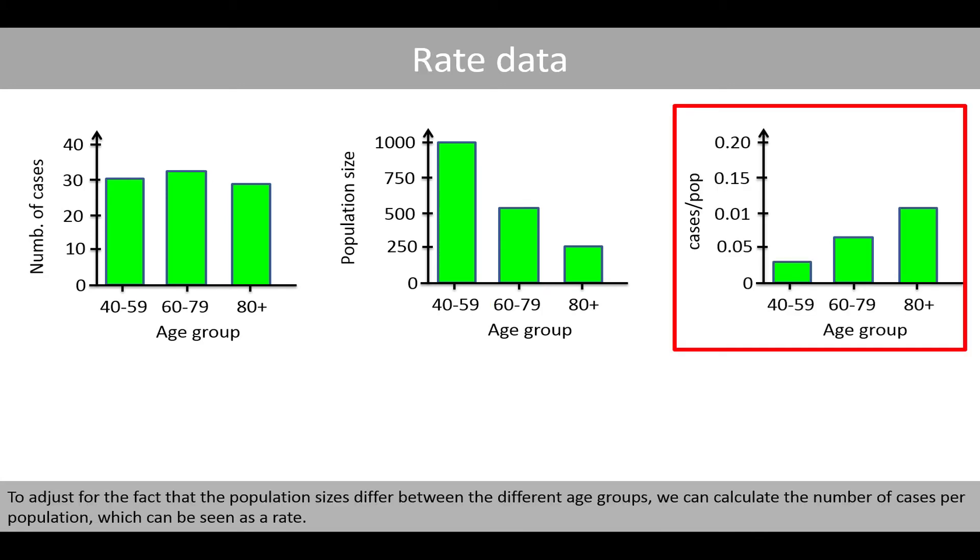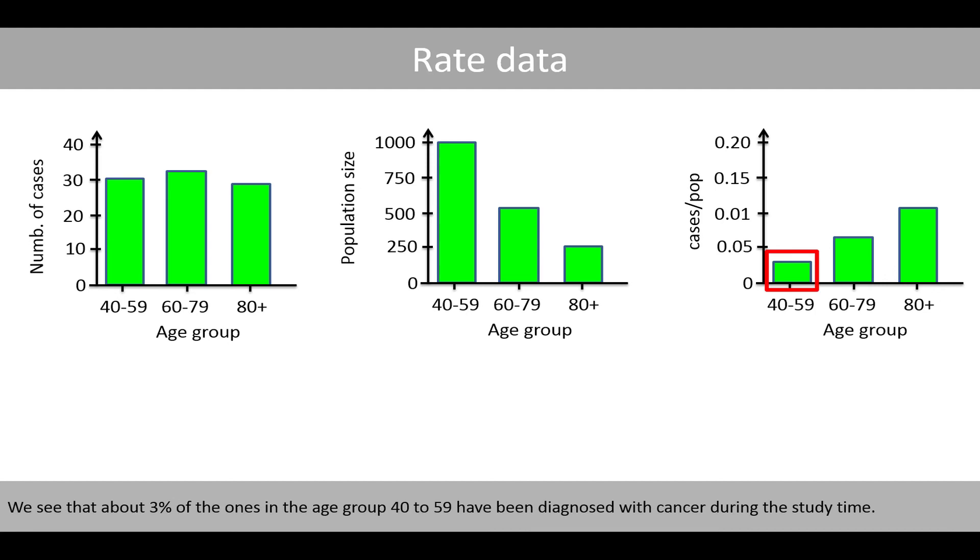To adjust for the fact that the population sizes differ between the different age groups, we can calculate the number of cases per population, which can be seen as a rate. We see that about 3% of the ones in age group 40 to 59 have been diagnosed with cancer during the study time. For example, this proportion was calculated by dividing the number of cases by the population size. We see that the proportion of cases increases for the elderly groups, which seems reasonable.